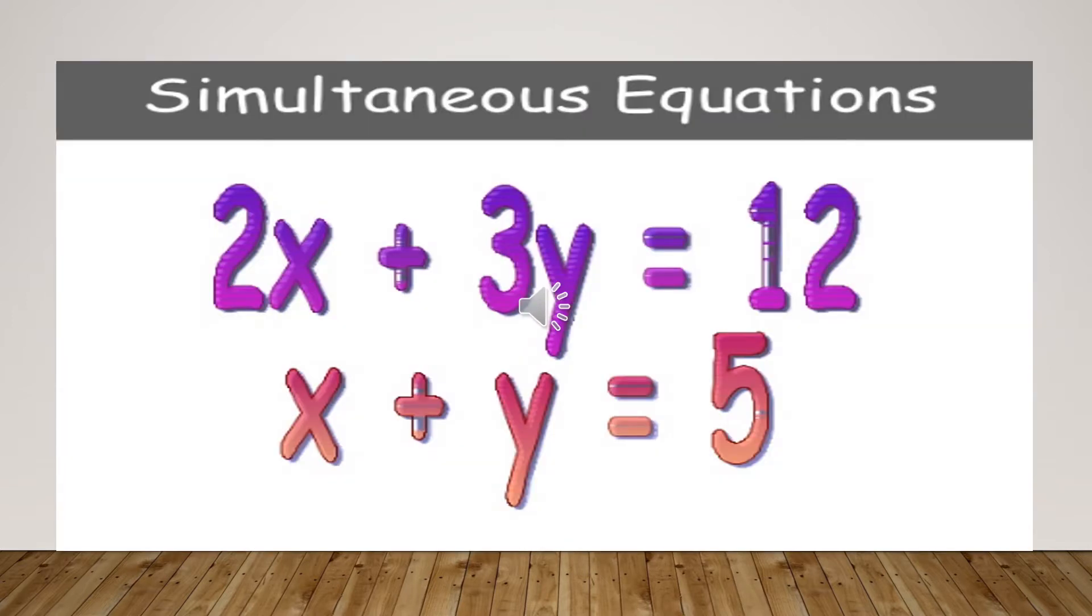Here you can see that two equations, that is 2x plus 3y is equal to 12 and x plus y is equal to 5. Both of them are simultaneous equations. Now, you should understand that how can we recognize that the equation is simultaneous or not.